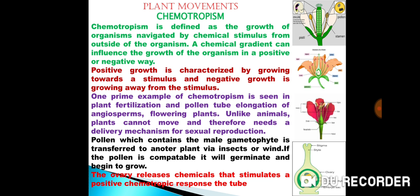Unlike animals, plants cannot move and therefore need a delivery mechanism for sexual reproduction. Pollen, which contains the male gametophyte, is transmitted to another plant via insects or wind. If the pollen is compatible, it will germinate and begin to grow.